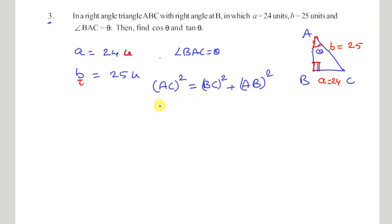Here AC is 25 cm, substitute it. BC is 24. So we have 25 squared equals 24 squared plus AB squared. 25 squared is 625, equals 576, that is 24 squared, plus AB squared.